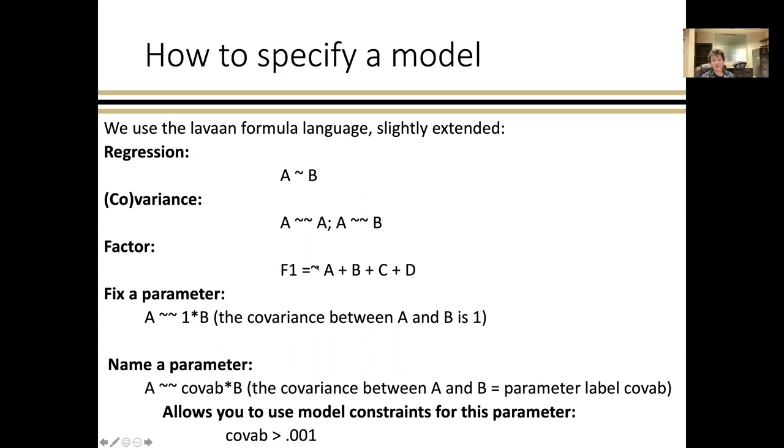To fix a parameter, you would put a number followed by an asterisk on the right-hand side of the parameter that you're estimating. So this would fix the covariance between A and B to one. And to name a parameter, you would write the parameter label using some set of letters. Here I'm naming the covariance between A and B, cove AB. And what this does is it allows you to use model constraints for this parameter. Let's say the covariance is estimating as negative, but you have some sense that it should be positive. So you put in this parameter constraint to keep it above zero.